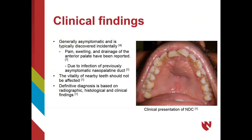These cysts are generally found during routine radiographic examination because it is typically an asymptomatic phenomenon. However, some pain, swelling, and drainage of the anterior palate have been reported, most often due to infection of a previously asymptomatic nasal palatine duct. The surrounding dentition — teeth 7, 8, 9, and 10 — are vital, and the definitive diagnosis of the nasal palatine duct cyst is based on radiographic, histological, and clinical findings. The figure on the right depicts a clinical presentation of swelling in the anterior palate due to a nasal palatine duct cyst, causing displacement of teeth 8 and 9.